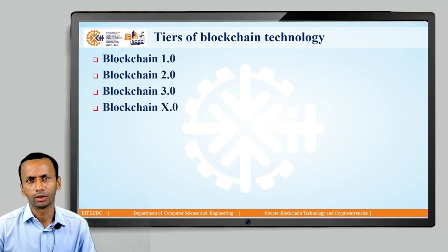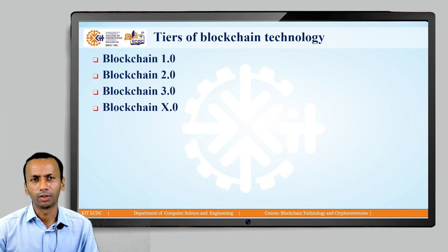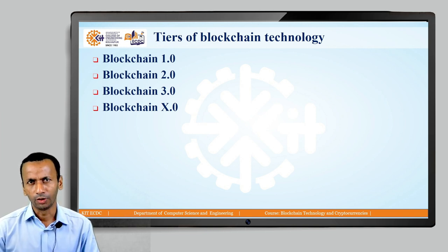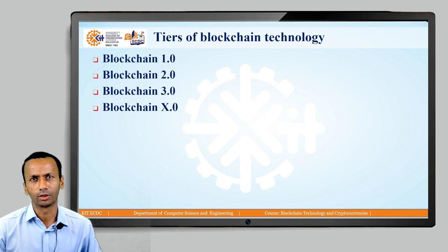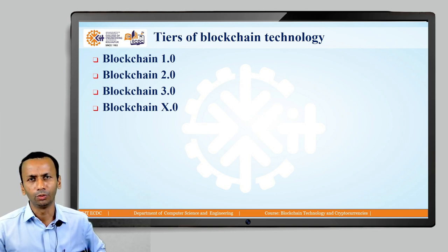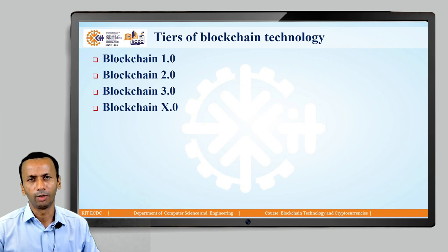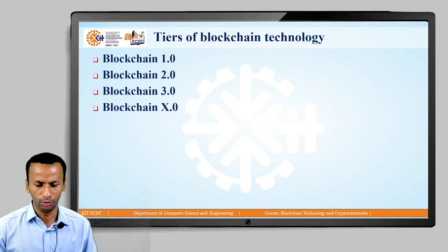The tiers of blockchain technology refer to how blockchain advancement is categorized as per application development. Let us see one by one: blockchain 1.0, 2.0, 3.0, and X.0 — where X.0 is for future advancement. In blockchain 1.0, Bitcoin was first introduced and Bitcoin-kind applications were developed on blockchain technology. That is the first tier, the first generation of blockchain technology.